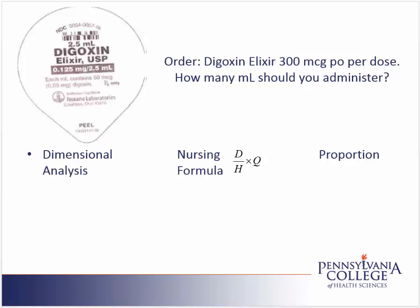First, we'll look at dimensional analysis. In dimensional analysis, we always start with what's ordered and place it over 1. So our order is 300 micrograms — I'll place 300 micrograms over 1. Next, I want to cancel micrograms, so I'll start my next fraction with micrograms on the bottom of the fraction.